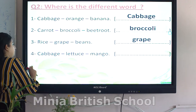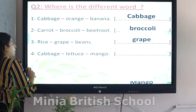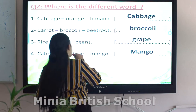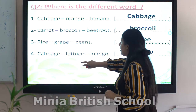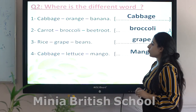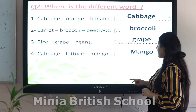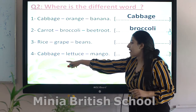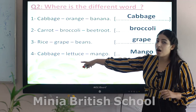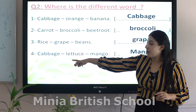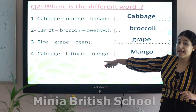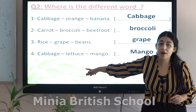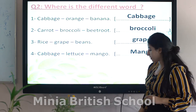Number four: cabbage, lettuce, and mango. The different word is mango. Why? Because cabbage and lettuce are leaves of plants, but mango is a fruit. So mango is the different word.